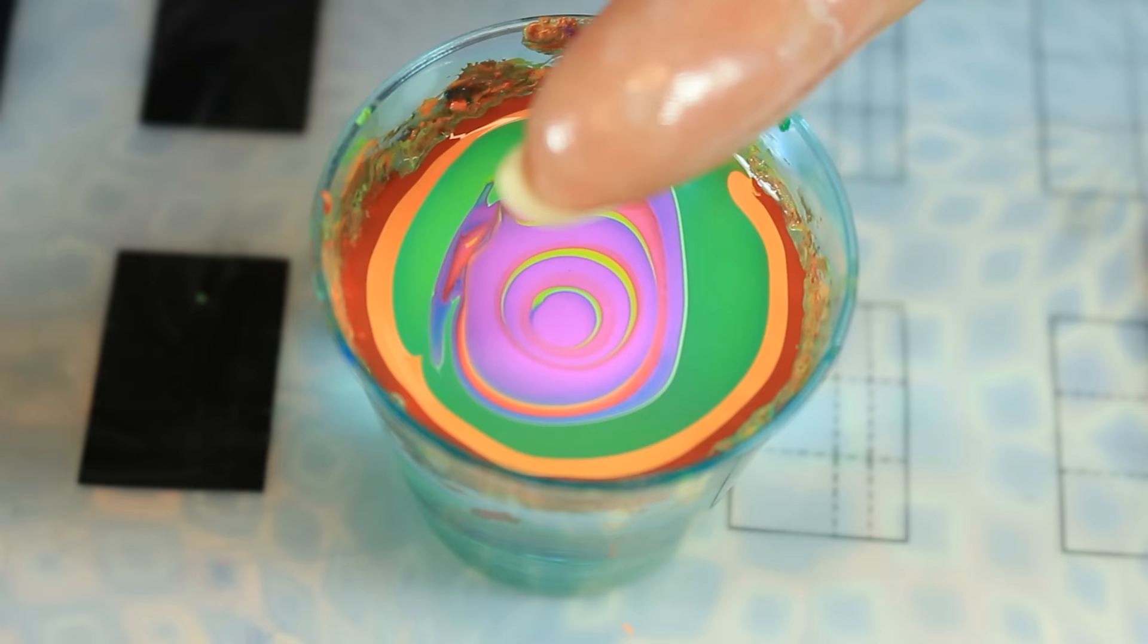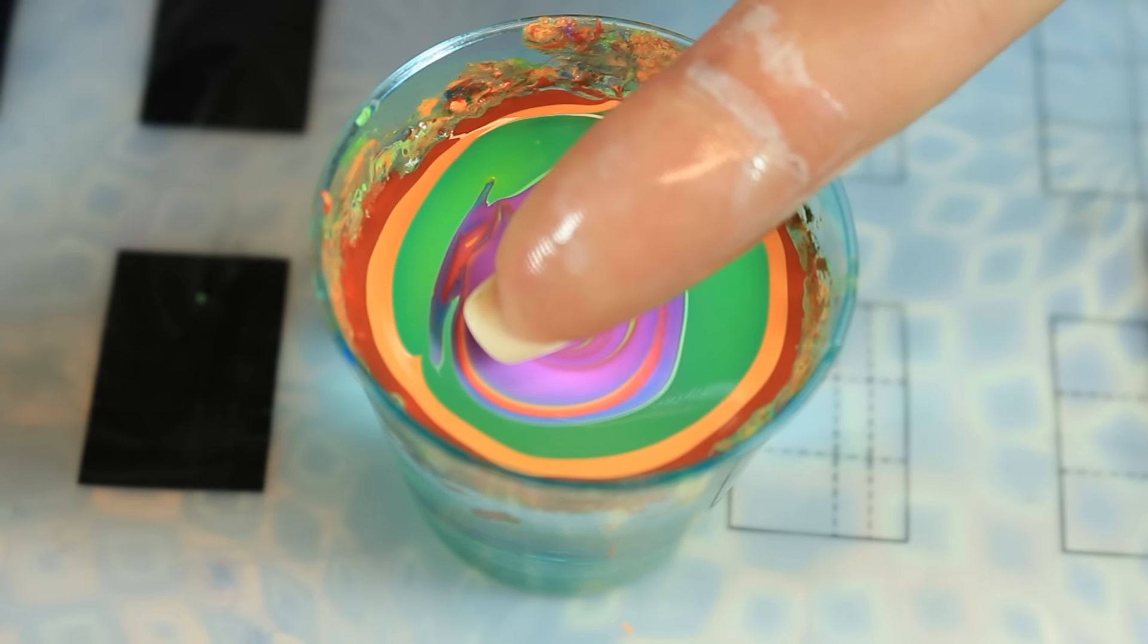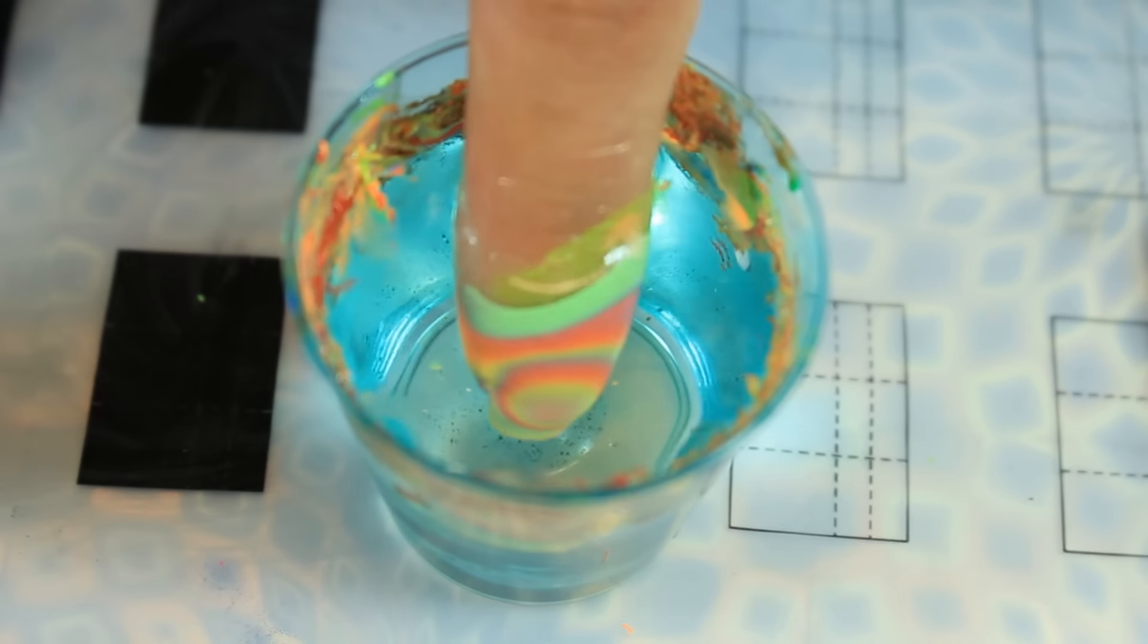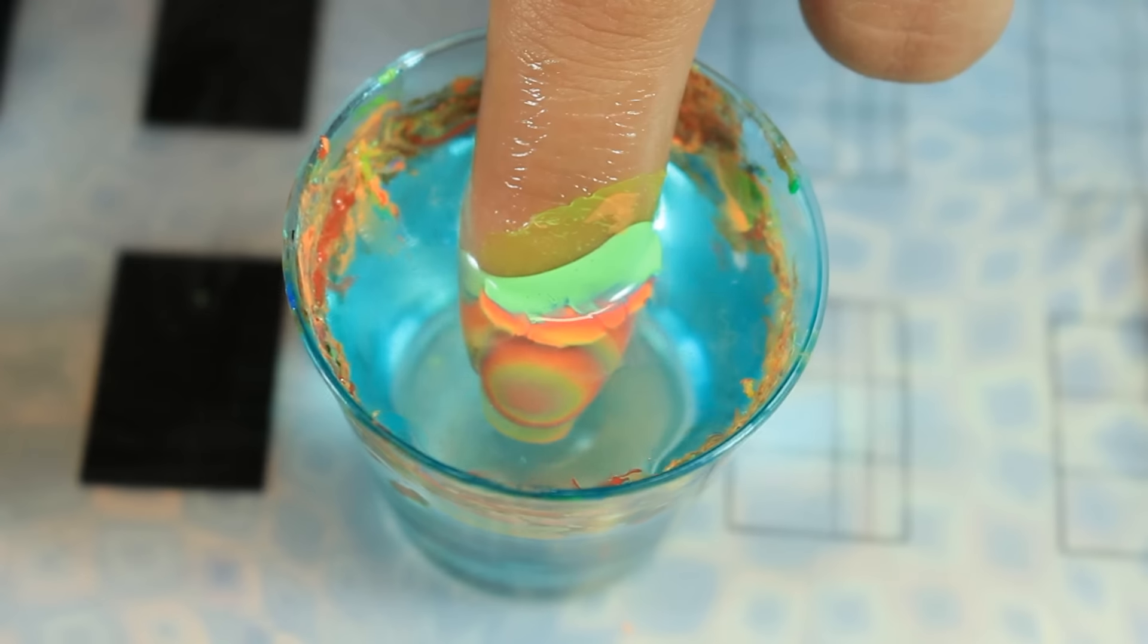Okay, so I'm going to dunk my finger in the center. And what I like to do is I like to pull out slowly.